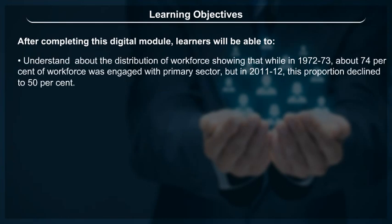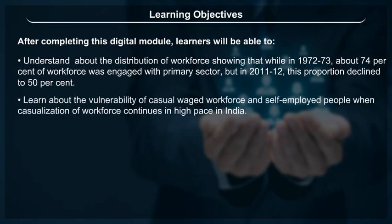Learners will understand the distribution of workforce, showing that while in 1972-73 about 74% of the workforce was engaged in the primary sector, by 2011-12 this proportion declined to 50%. They will also learn about the vulnerability of casual wage laborers and self-employed people when casualization of the workforce continues at a high pace in India.